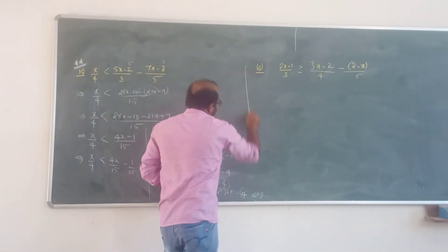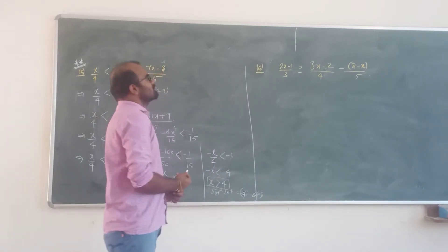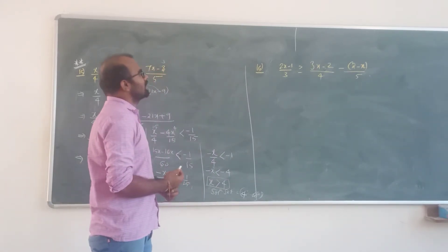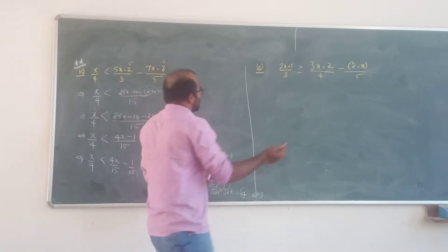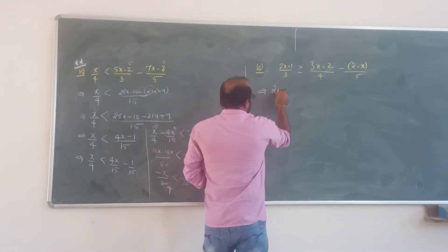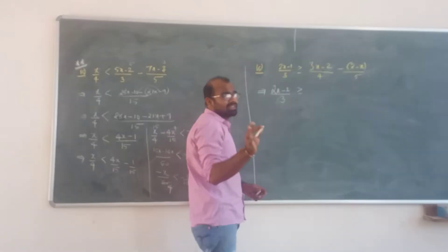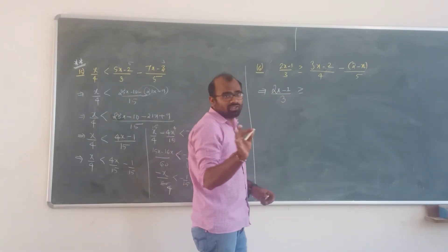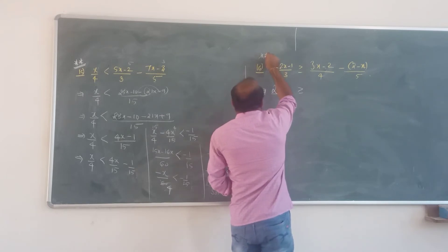Next note: 2x minus 1 by 3 greater or equal to 3x minus 2 by 4 minus 2 minus x by 5. Same method. 2x minus 1 divided by 3 — simplification model. All simplification model is similar. This is also important.